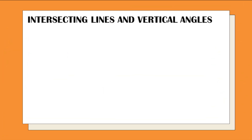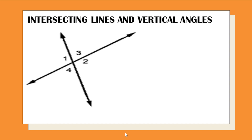Next, how about intersecting lines and vertical angles? When we say intersecting lines, these are lines that intersect — two lines that intersect at one point. So we have angles 1, 2, 3, and 4. Intersecting lines are lines that meet at a certain point, and that point is called the point of intersection.